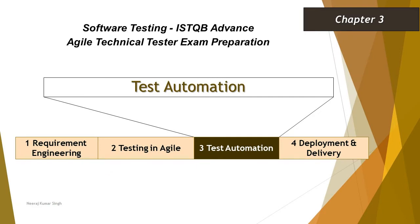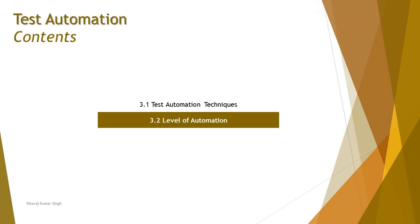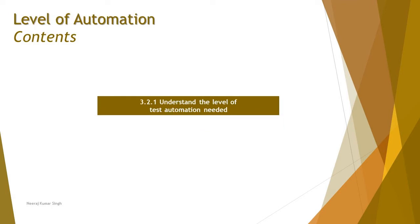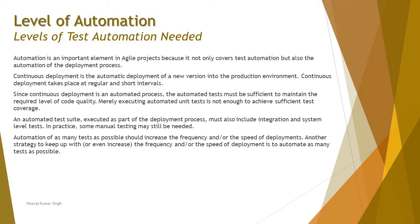Hello friends, greetings for the day. Welcome back to another tutorial on ISTQB Advanced Agile Technical Tester. We are in chapter 3, looking at the last topic — 3.2, Level of Automation — and covering one sub-segment topic: 3.2.1, Understanding the Level of Test Automation Needed.